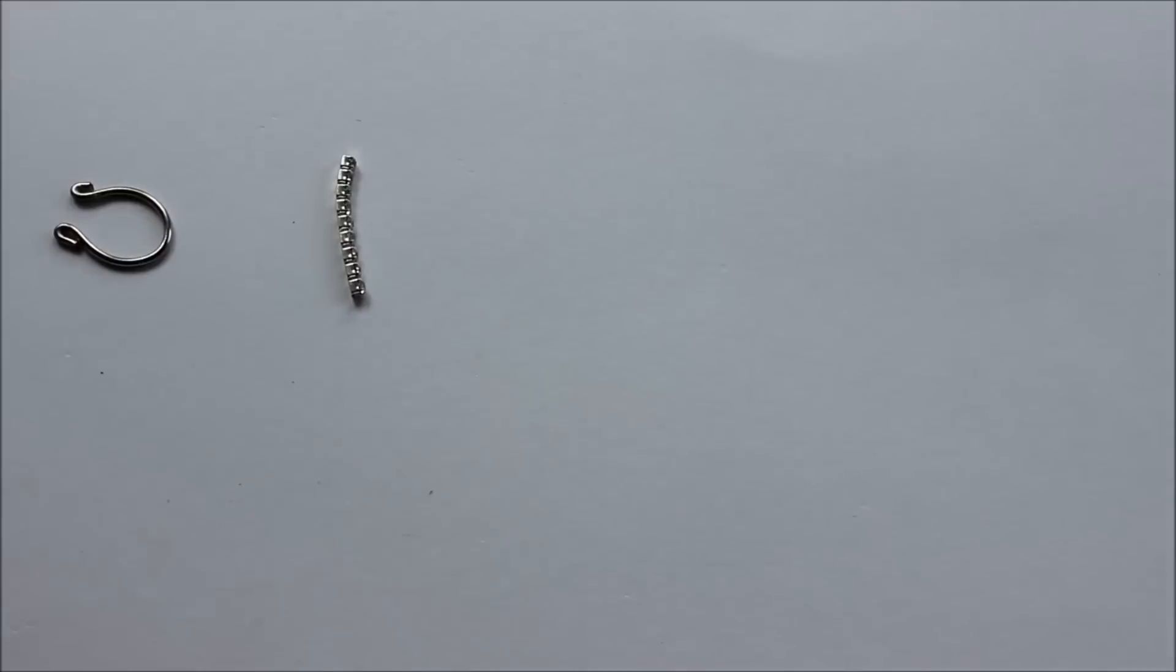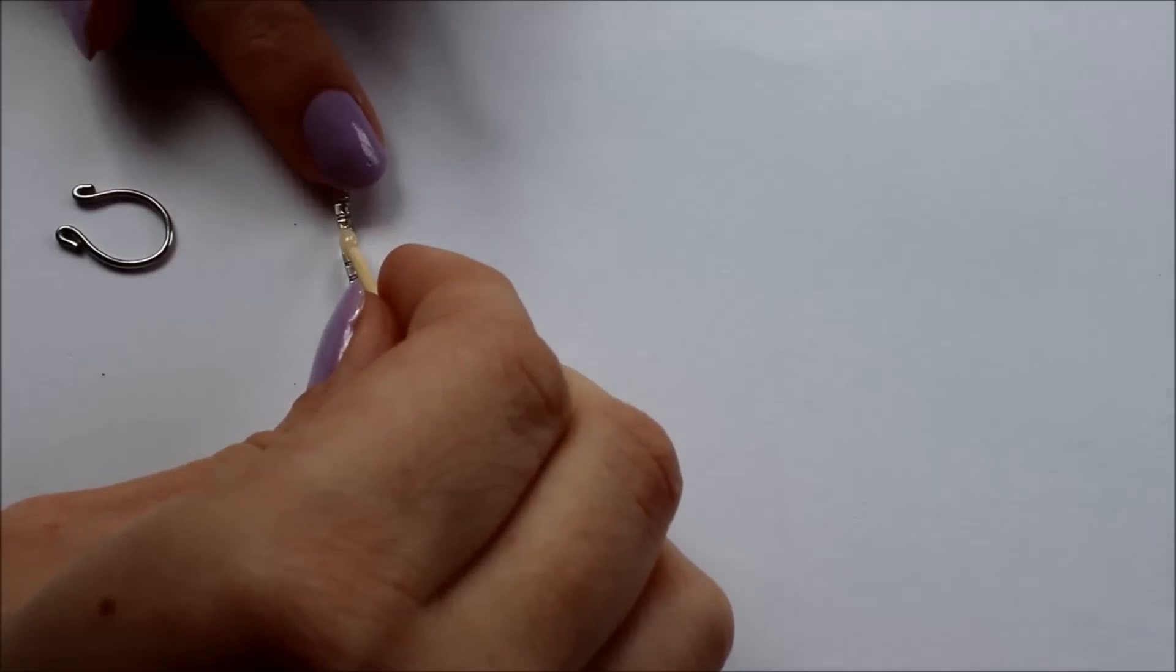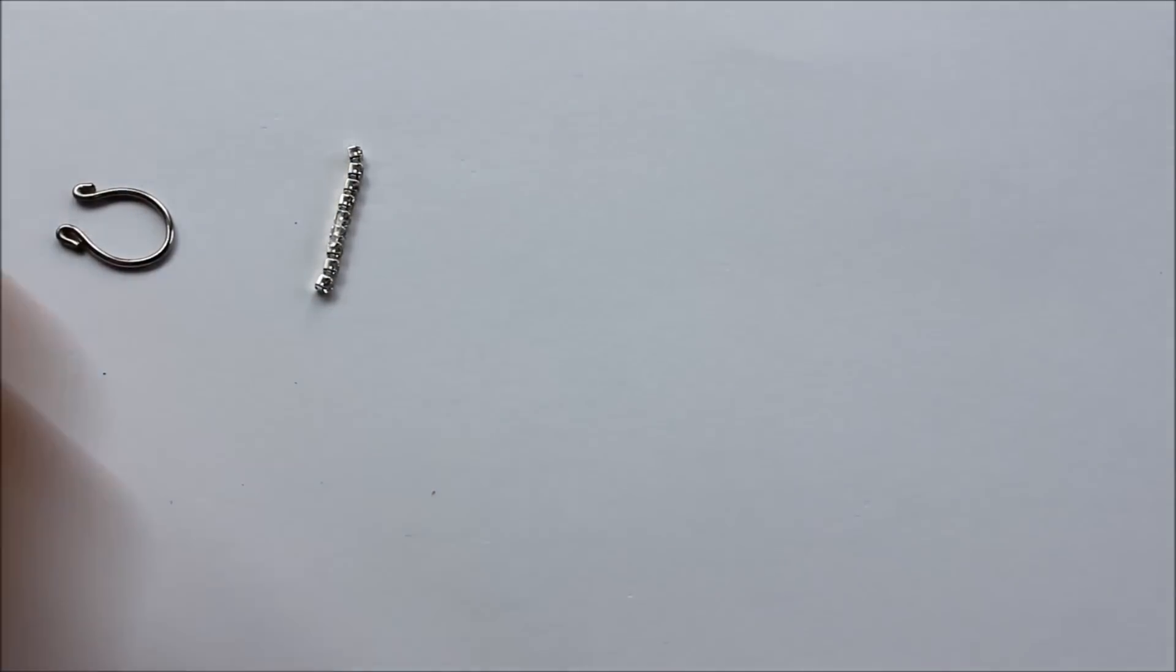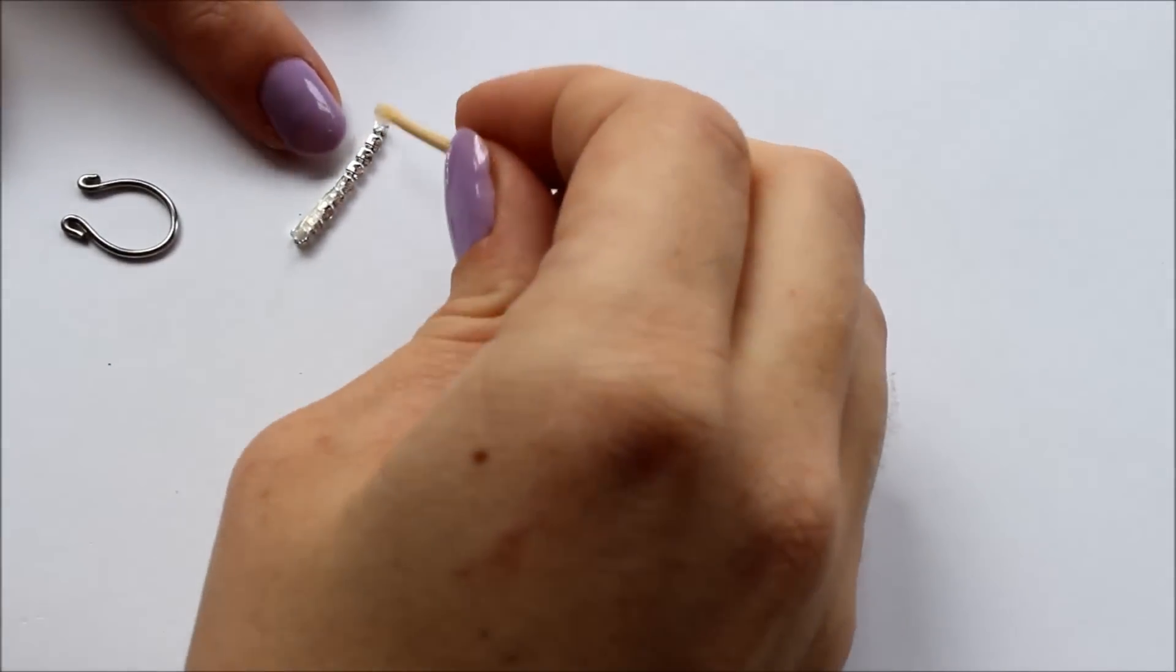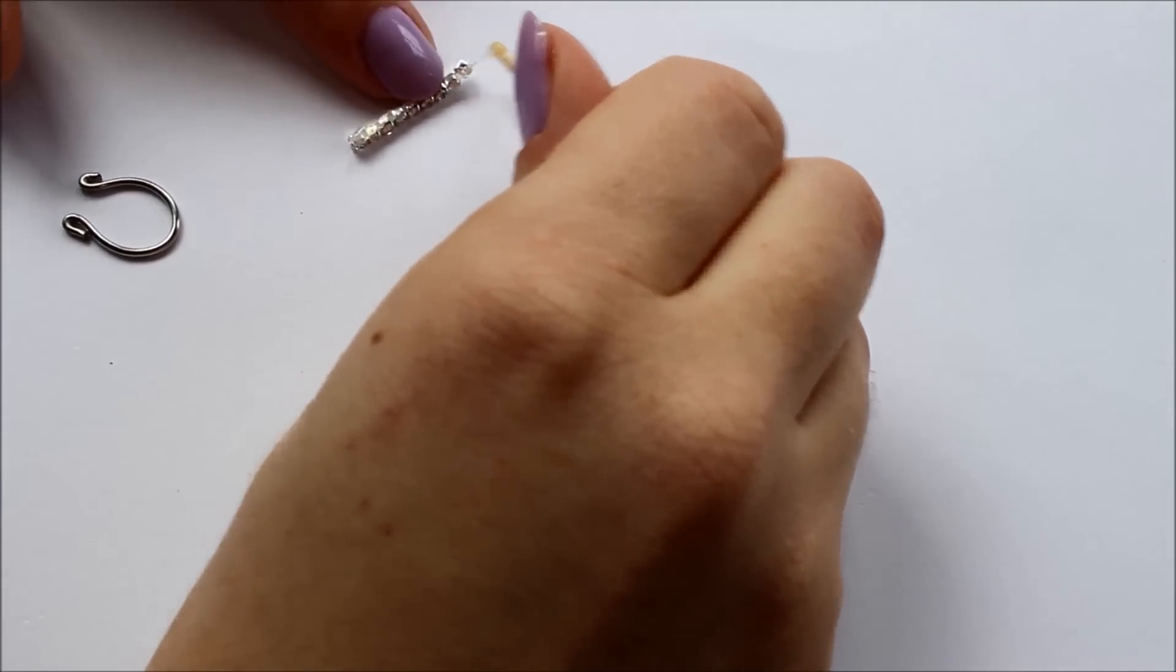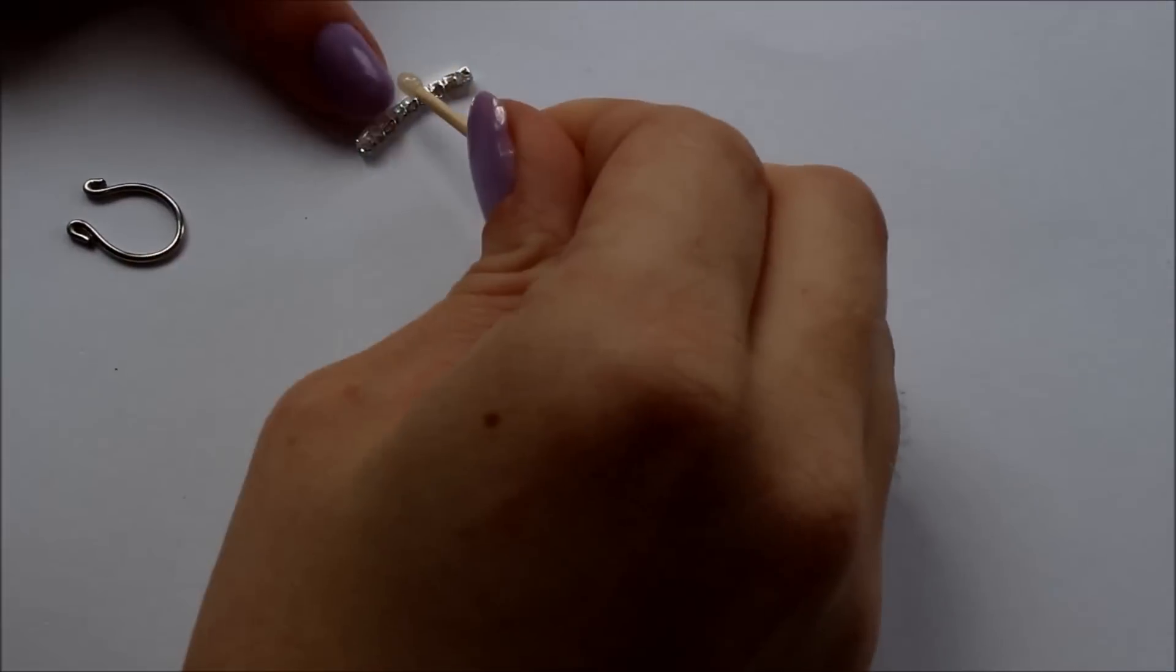To make a fancier septum ring, I used some diamante chain I found in a nail art kit. Simply cut the chain to the length you need, add your epoxy glue or super glue and carefully glue it on. Wait for the glue to dry and your septum ring is complete.